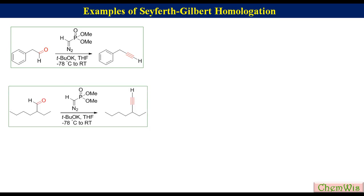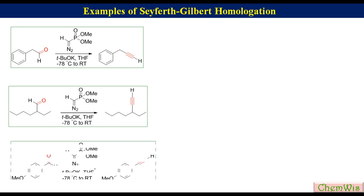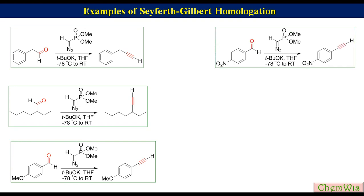Examples of Seyferth-Gilbert homologation include: conversion of 2-phenylacetaldehyde to prop-1-yn-1-ylbenzene, 2-ethylhexanal to 3-ethylhept-1-yne, 4-methoxybenzaldehyde to 1-ethynyl-4-methoxybenzene, and 4-nitrobenzaldehyde — these are some of the examples of Seyferth-Gilbert homologation.